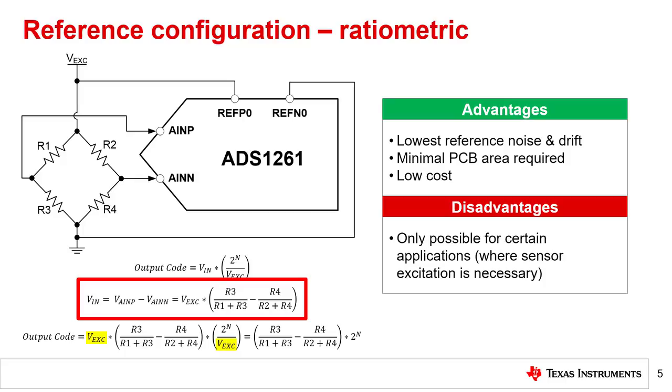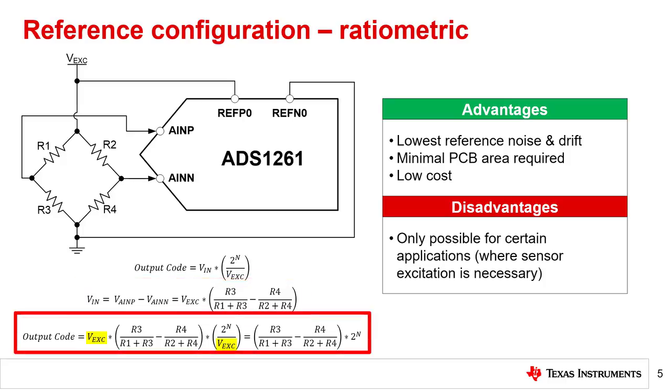When you combine these results, the final output code equation shows that the result is independent of the excitation voltage, which is the desired result.